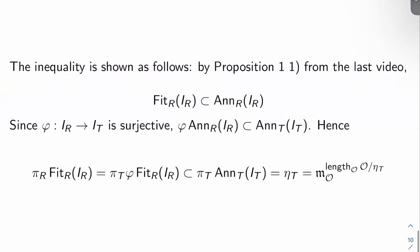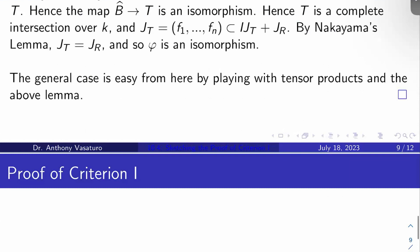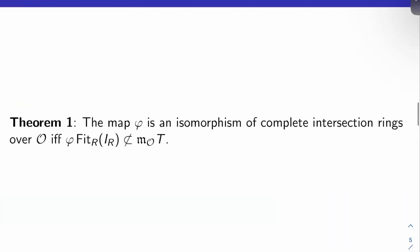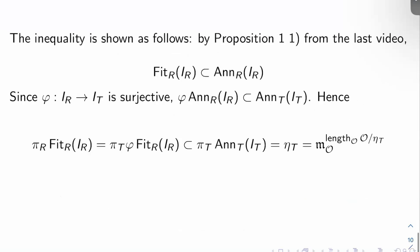Now let's prove Criterion 1. First, let's show the inequality. From Proposition 1 part 1 in the last video, the R-Fitting ideal of I sub R is certainly contained in the R-annihilator of I sub R. Since phi viewed as a map from I sub R surjects onto I sub T (because the triangle commutes), phi of the R-annihilator of I sub R is contained in the T-annihilator of I sub T. So we have the string: pi sub R of the R-Fitting ideal of I sub R equals, by commutativity, pi sub T of phi of the R-Fitting ideal of I sub R, which is contained in pi sub T of the T-annihilator of I sub T, which is by definition eta sub T.